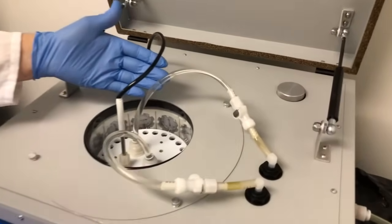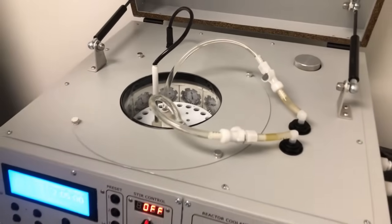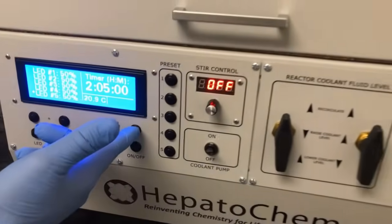Then we use the quick connects to connect the inlet and outlet of the thermostatic fluid. As you turn on the pump, water will start to circulate. At this point, simply close the Lucent360 and start the timer for the reaction. Then turn on the light modules and everything has started.